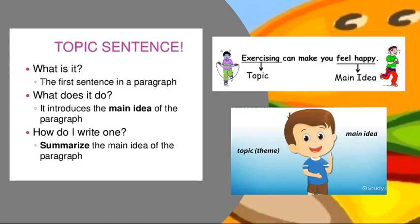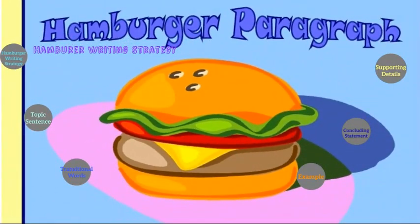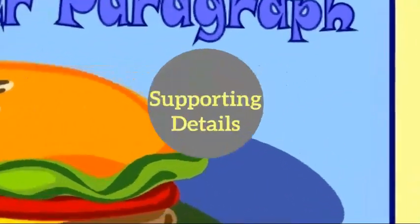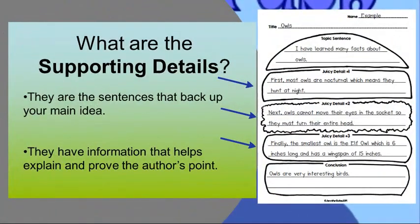By reading this sentence, I know that the whole paragraph is going to be about exercising and how it makes you feel. Now, moving on to the supporting details. The supporting details are sentences that back up the main idea. They come right after the topic sentence, and they always begin with a transitional word. The supporting details have information that help explain the topic sentence.